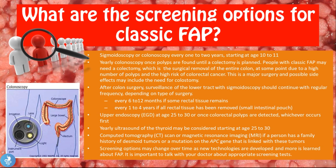An upper GI endoscopy is recommended at age 25 to 30, or once colorectal polyps are detected, whichever comes first. Yearly thyroid ultrasound may be considered starting at age 25 to 30. A CT or MRI is indicated if a person has a family history of desmoid tumors or an APC gene mutation linked with these tumors. Screening options may change as new technologies are developed.